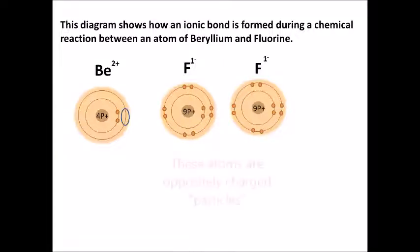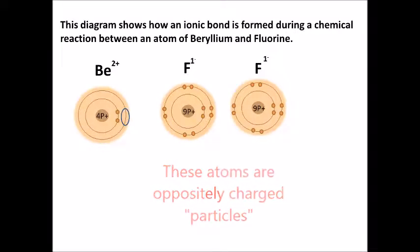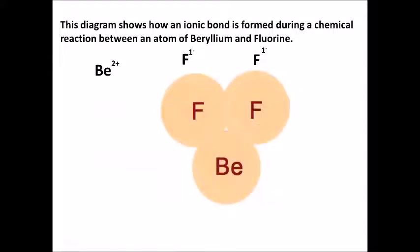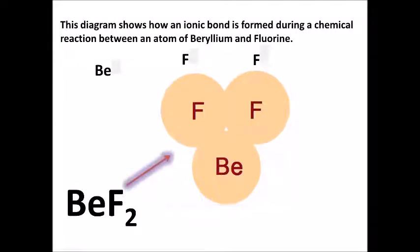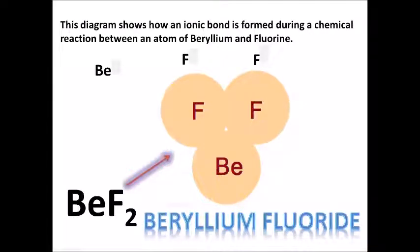Oppositely charged particles will attract each other, so the negatively charged fluorine atoms will attract the positively charged beryllium atom. Since the charges are exactly equal, when they're attracted they will cancel out the charges and form the formula unit BeF₂ — the formula for beryllium fluoride. Every formula unit of beryllium fluoride contains two fluorine atoms and one beryllium atom.